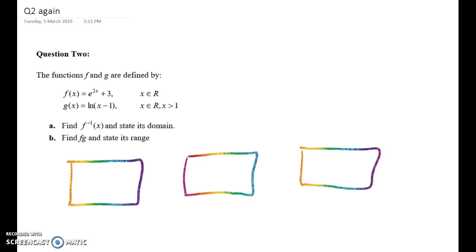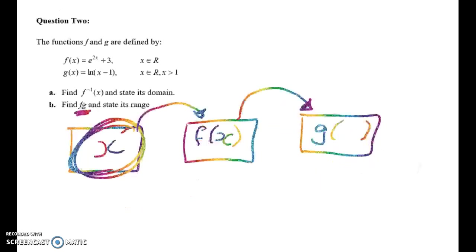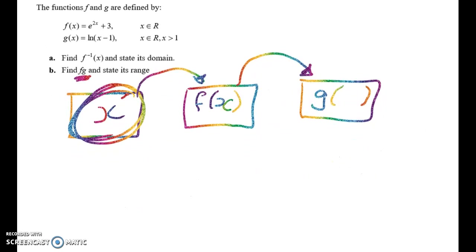So here we're starting with an x value and we're sticking that x value into the black box which is f(x). And then we're sticking it into another machine which does whatever the g thing is. So in this case it's the other way around. We're finding fg.